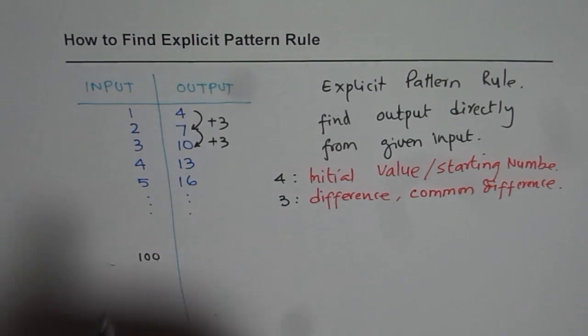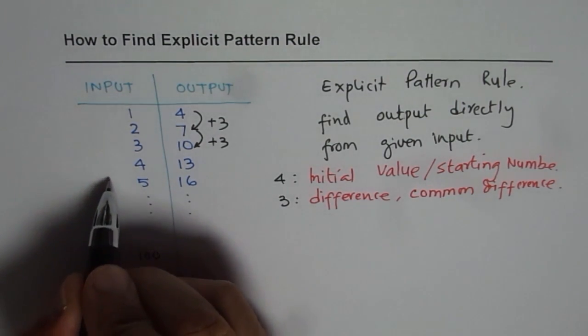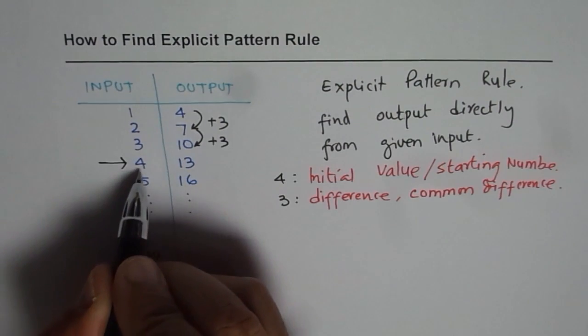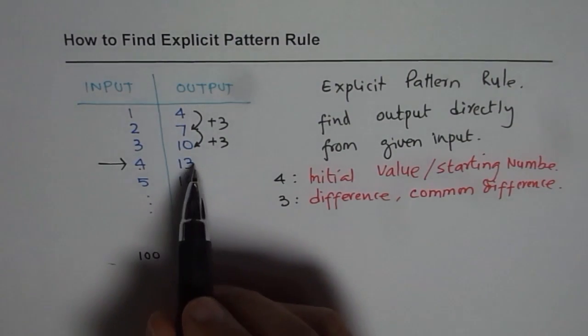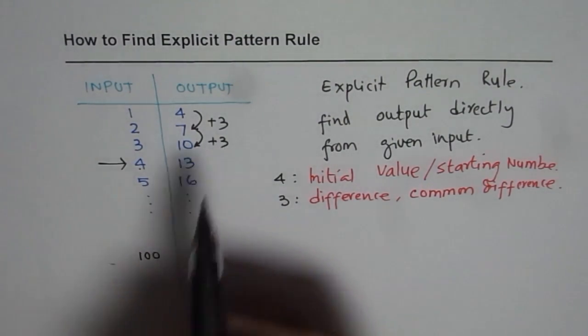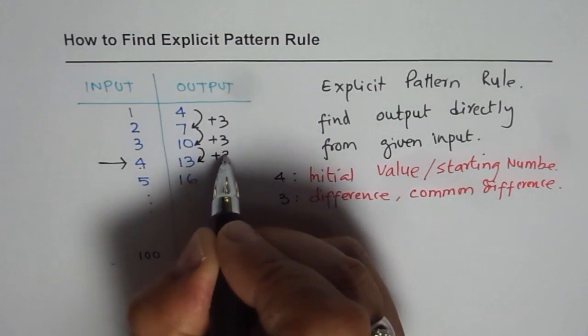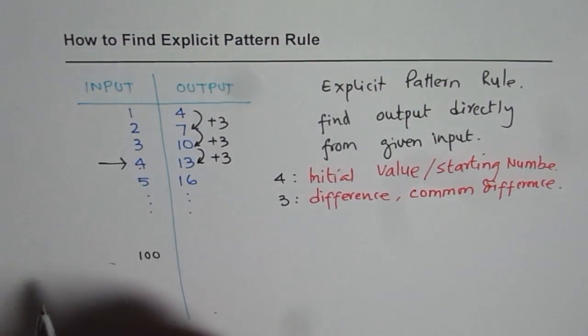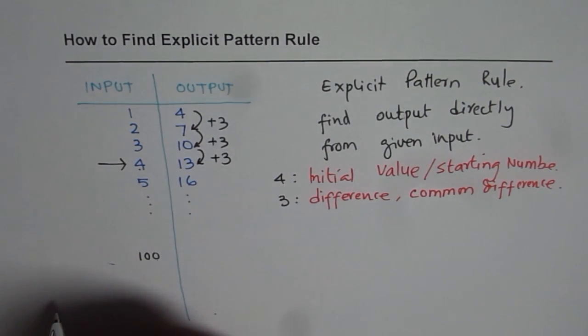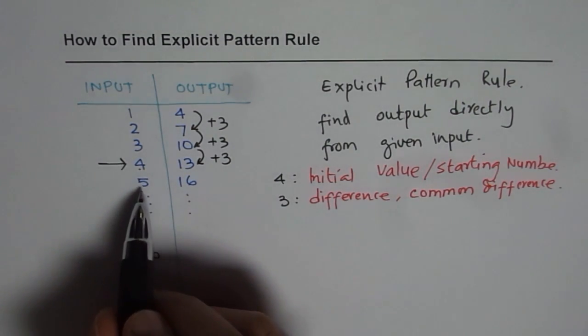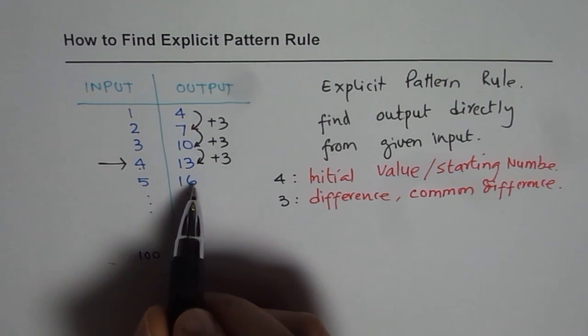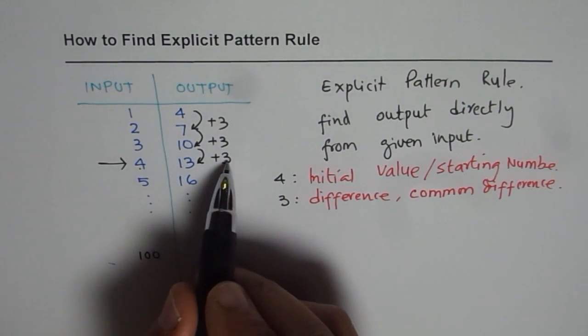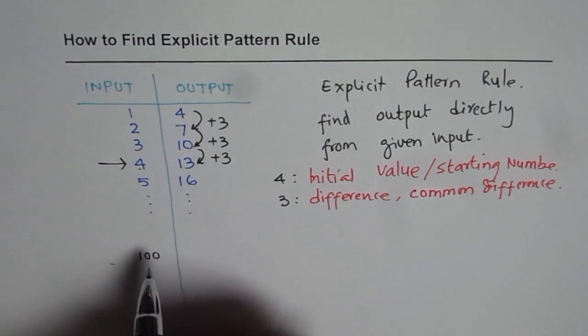You will note that if I have to find the output for 4th input, how many 3's do I have to add? I have to add three 3's, 1 less than 4. To find the 5th output I have to add four 3's. So that gives us the formula.